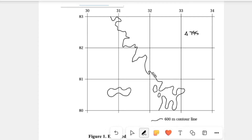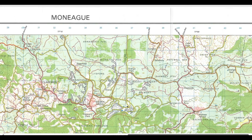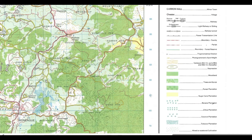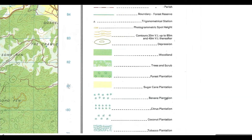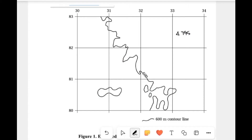You also have to identify, by the letter D, one depression east of Easting 32. Go down on your key and look at the symbol for what a depression looks like. And whenever you see that particular depression, you have to label it — which is right there where the red arrow is pointing — D for depression.